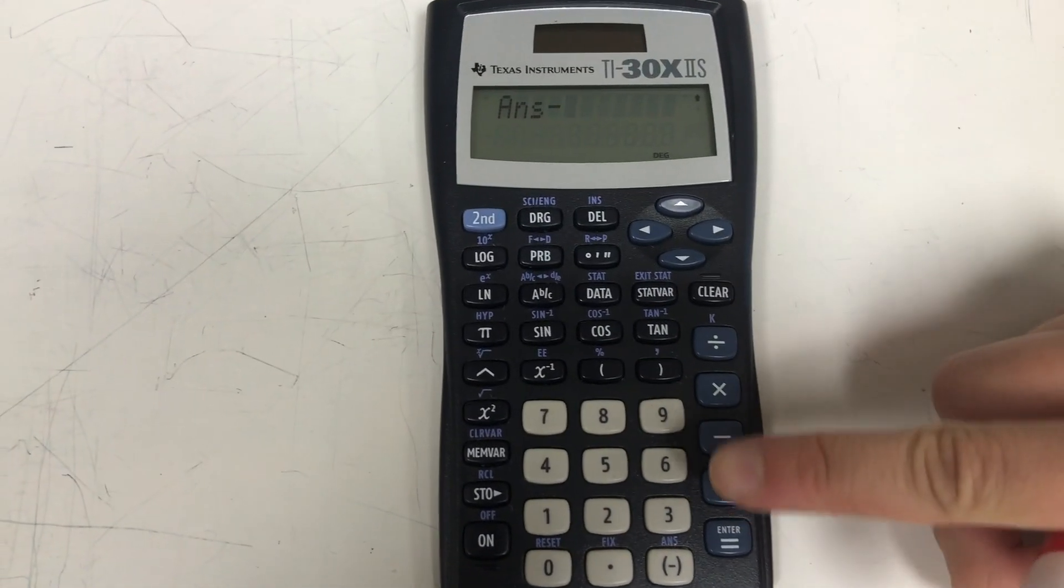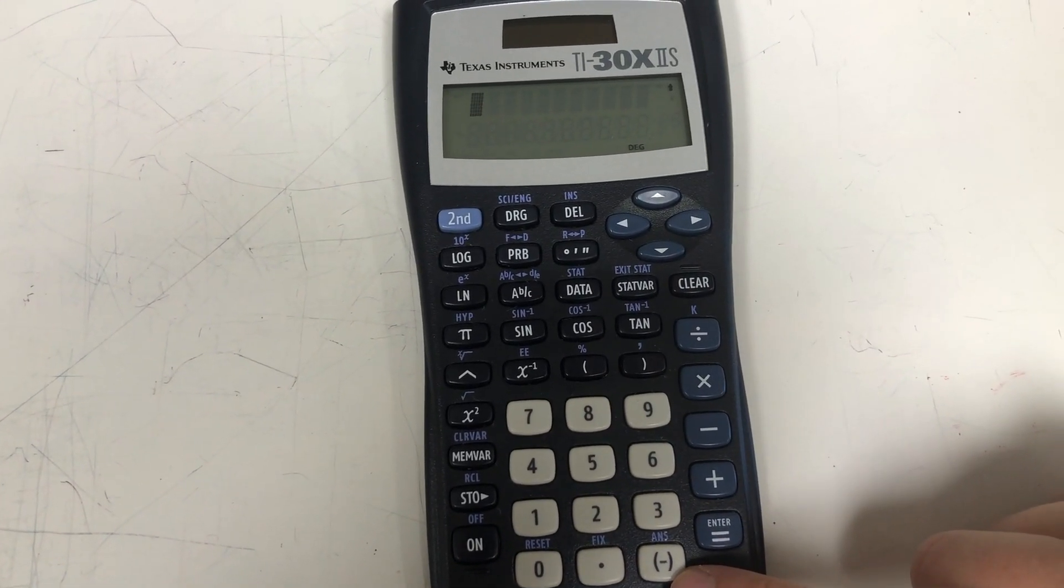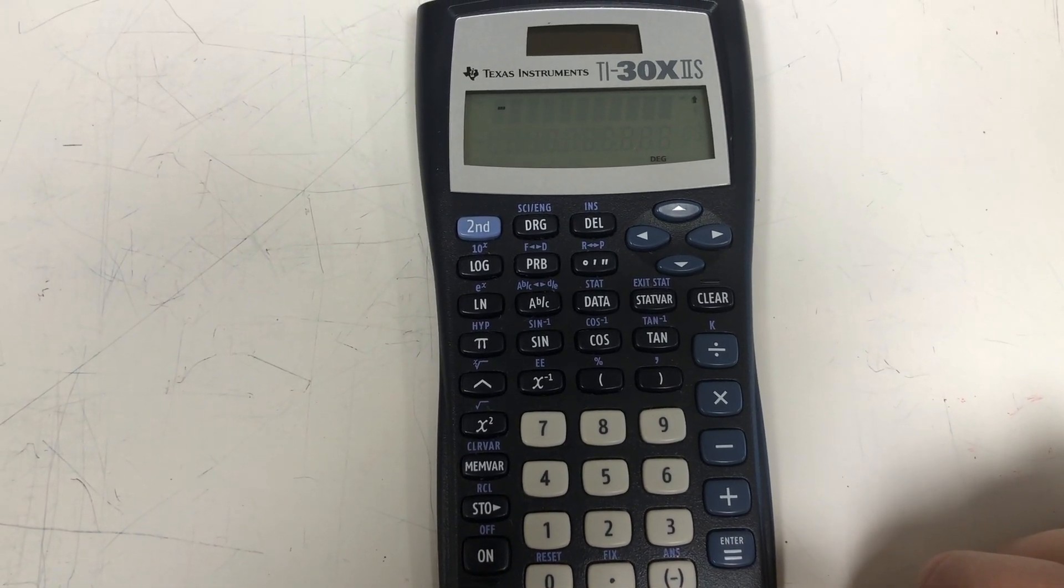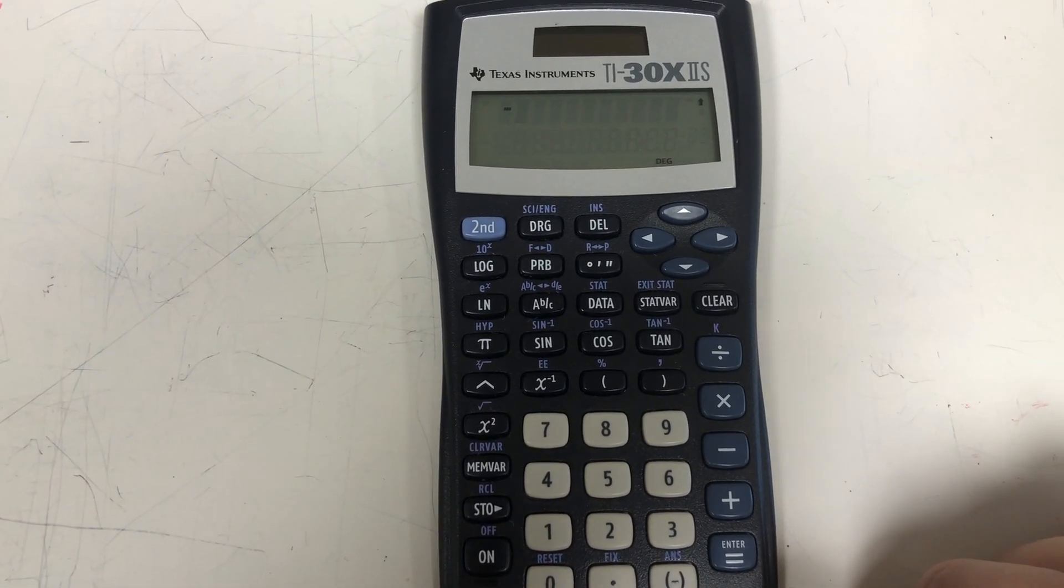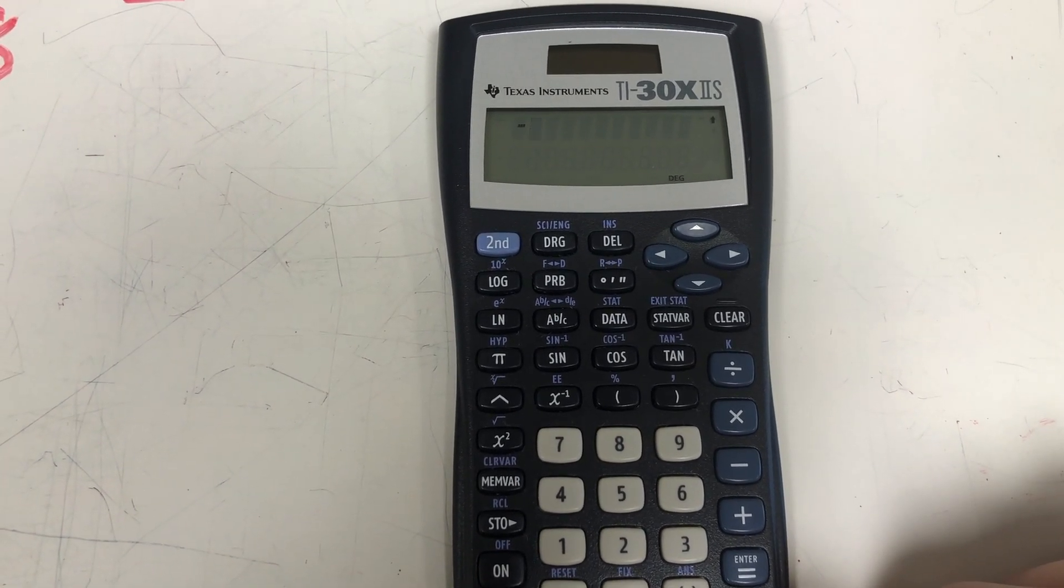So instead of pushing that minus sign, we're going to hit this key down here. This is a negative key and it just has a parenthesis around it right now. When I press that one, the negative sign is a little bit smaller and higher up than that minus button. When you're going back, you can always check and make sure you hit the correct button.